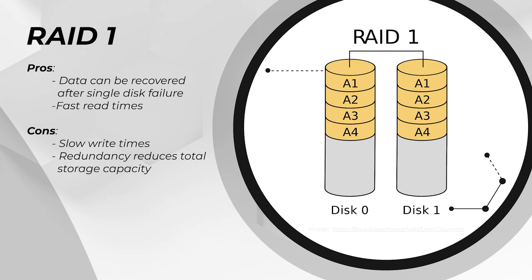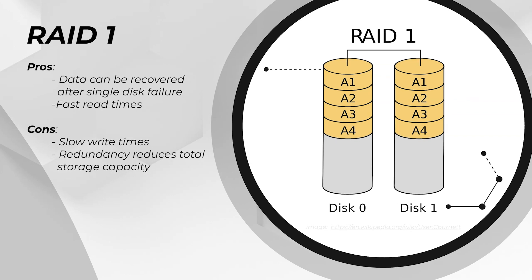RAID 1 does have a slightly faster read time thanks to being able to access two drives, but more importantly it's redundant. So if one drive in the RAID 1 array fails, the other drive is an exact copy that is still usable. Swap in a fresh new drive and the RAID will rebuild itself automatically.